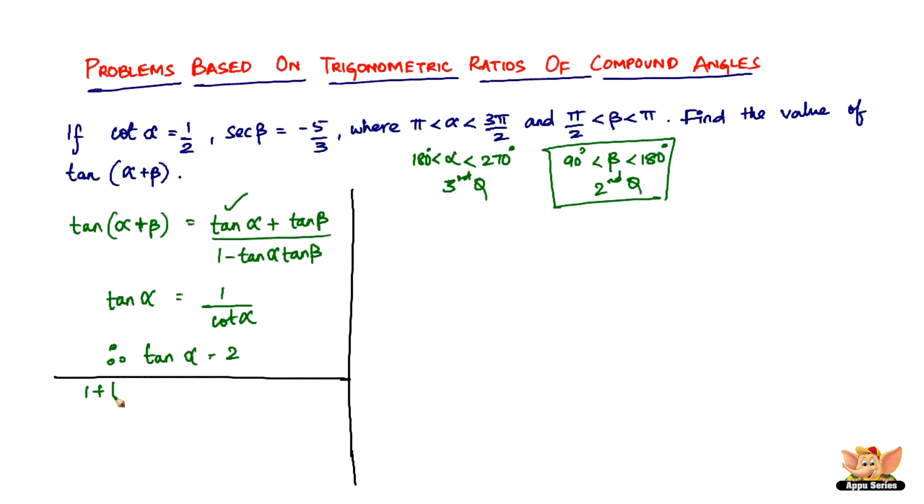1 plus tan² β equals sec² β. So tan β is going to be equal to negative square root of sec² β minus 1, negative because β lies in the second quadrant where tan is negative.